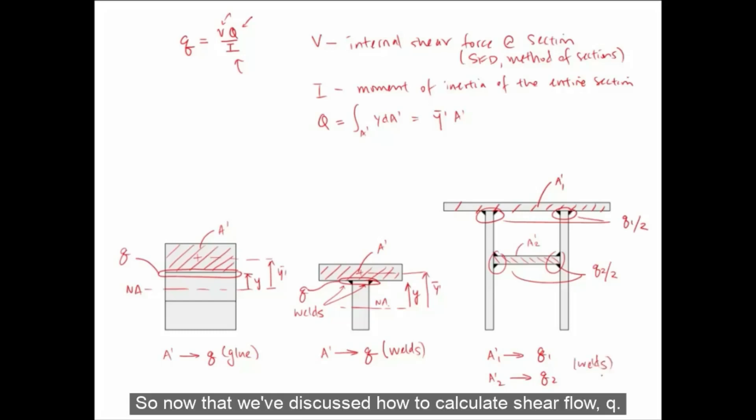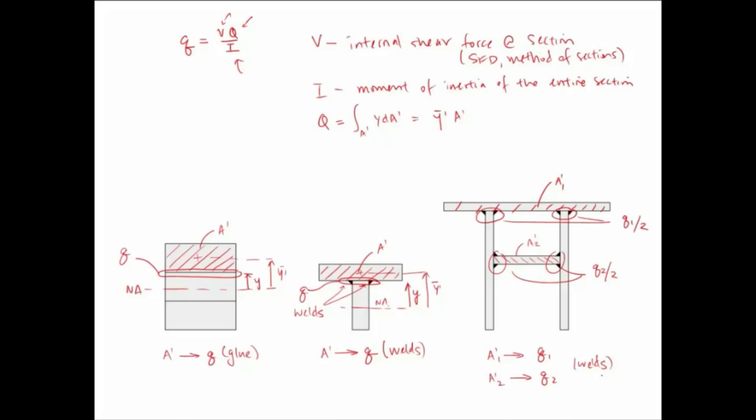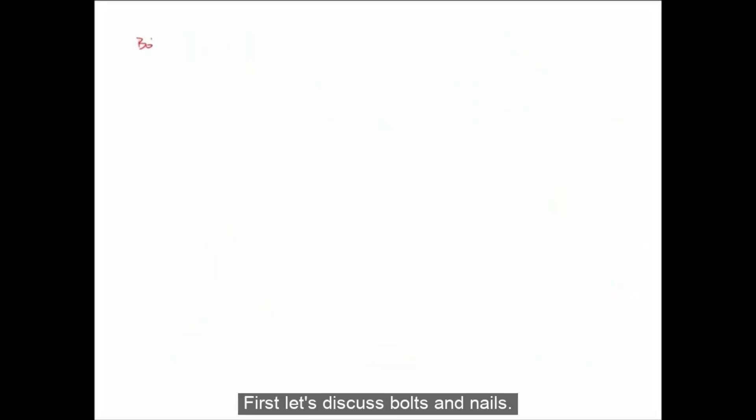So now that we've discussed how to calculate shear flow Q, we need to know how this pertains to specific types of bonding agents. So we have fasteners such as bolts and nails, we have glue, and we have welds, and they all behave differently. First, let's discuss bolts and nails.